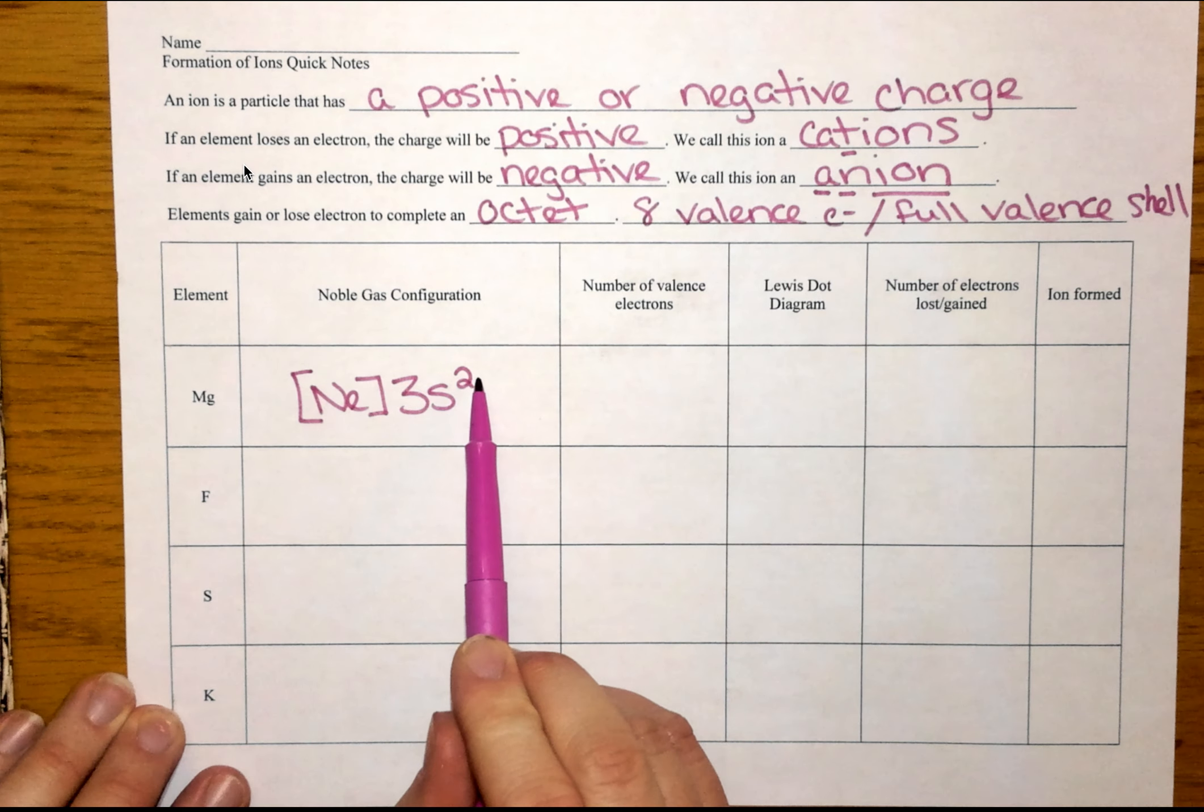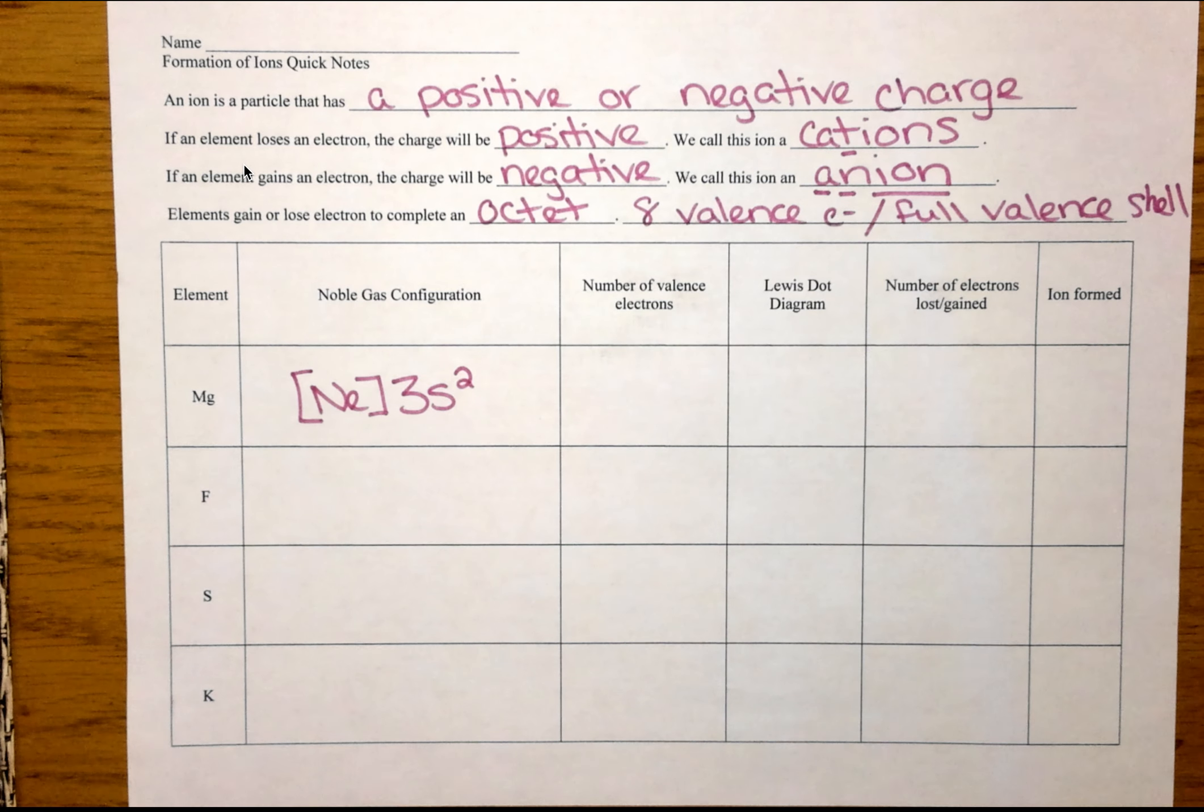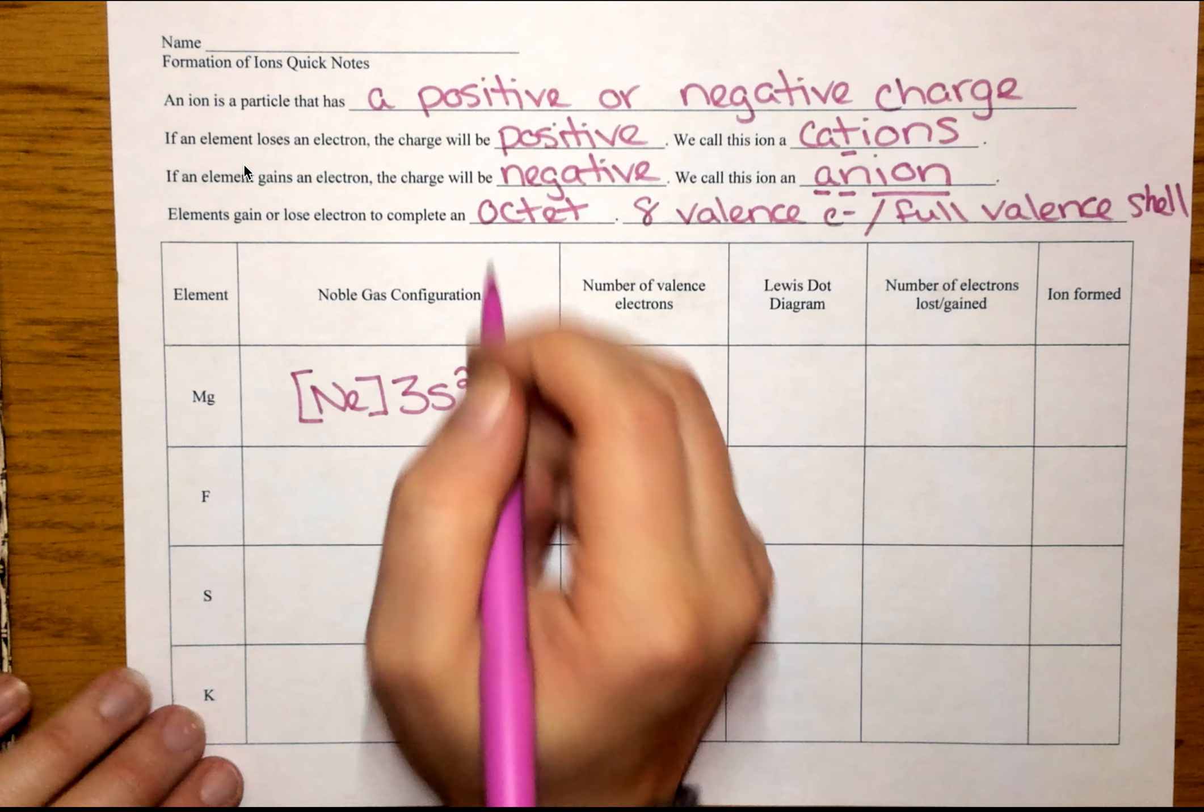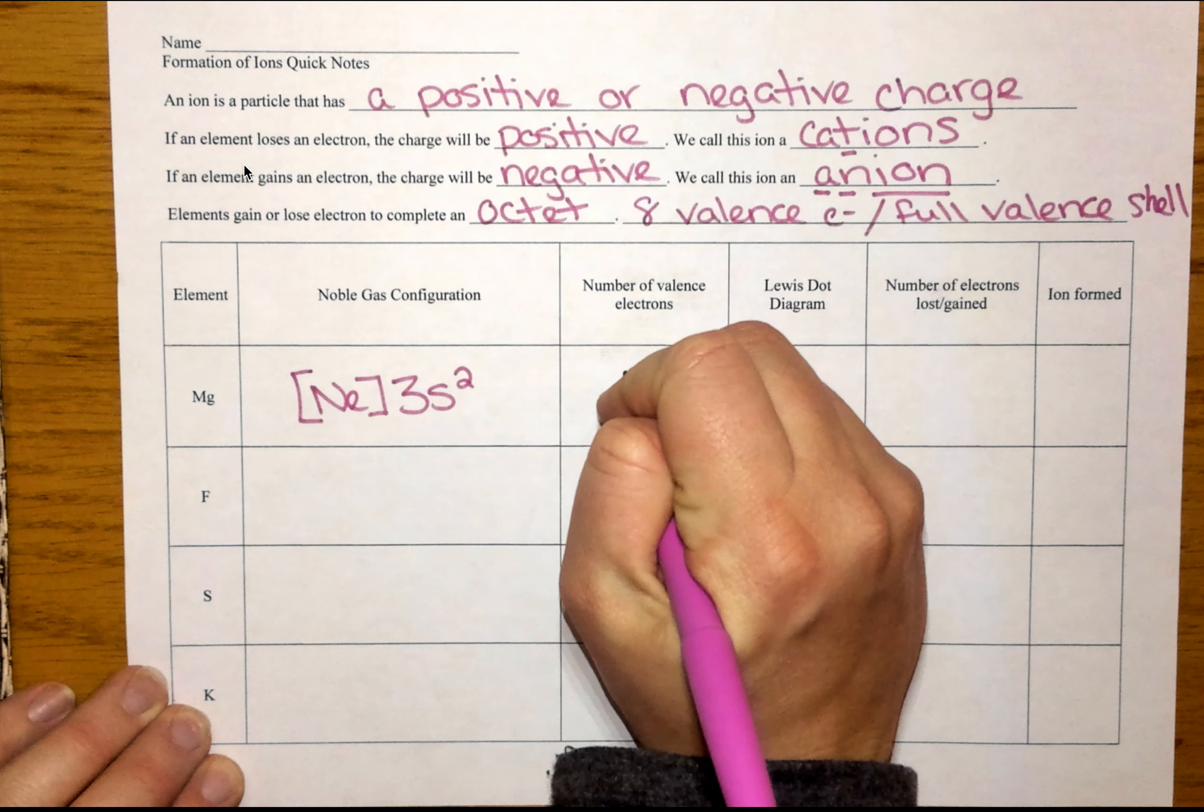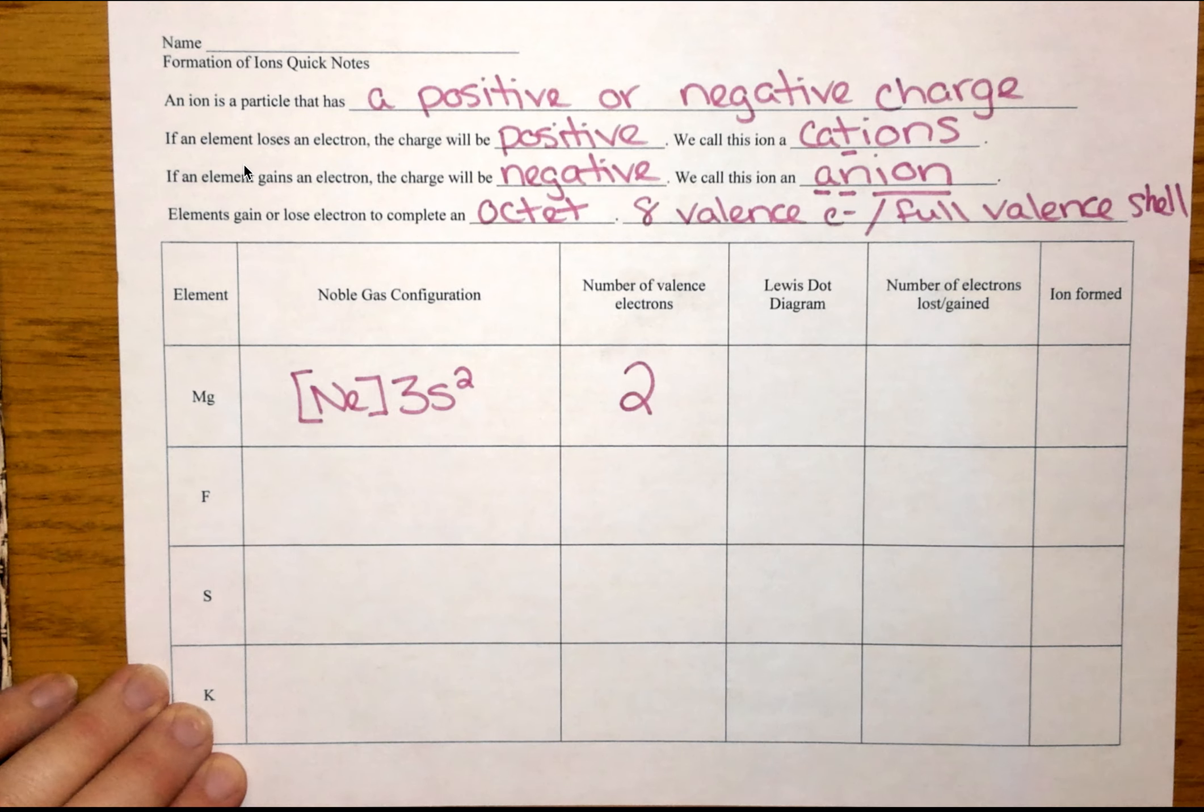And what this tells me is outside of neon, I have two electrons in my third energy level. So I have a noble gas core and then two additional electrons. That means I have two valence electrons.